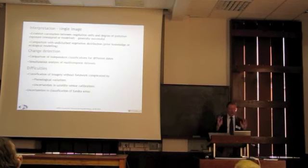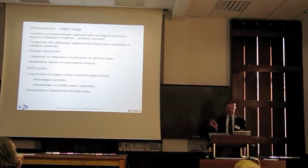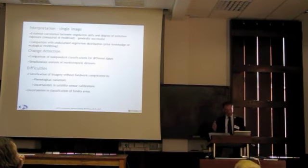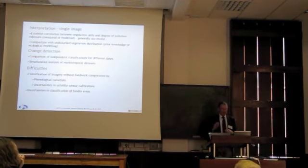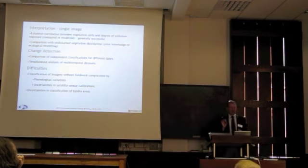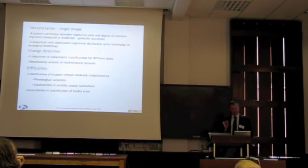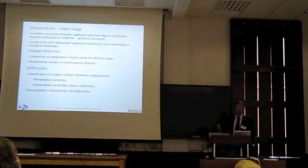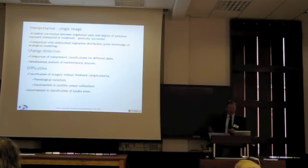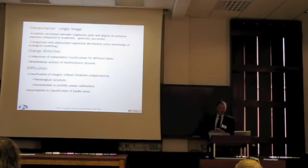If we take a single image like the one we're just looking at, we can — if things go well — establish a correlation between vegetation humidity and the degree of pollution exposure, measured or modelled. That usually works.